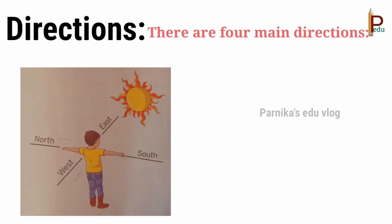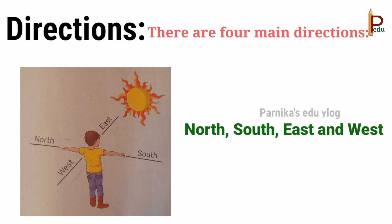Directions — there are four main directions: North, South, East, and West. If we go out in the morning and stand facing the sun, we would be facing the East. Behind us would be the West. Now if we stretch out our arms, to our right would be the South and to our left would be the North.